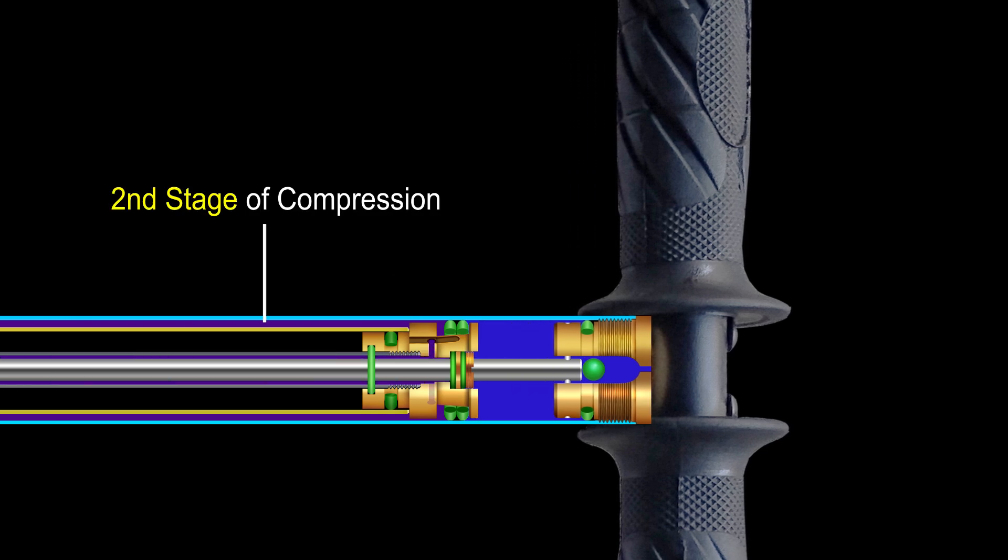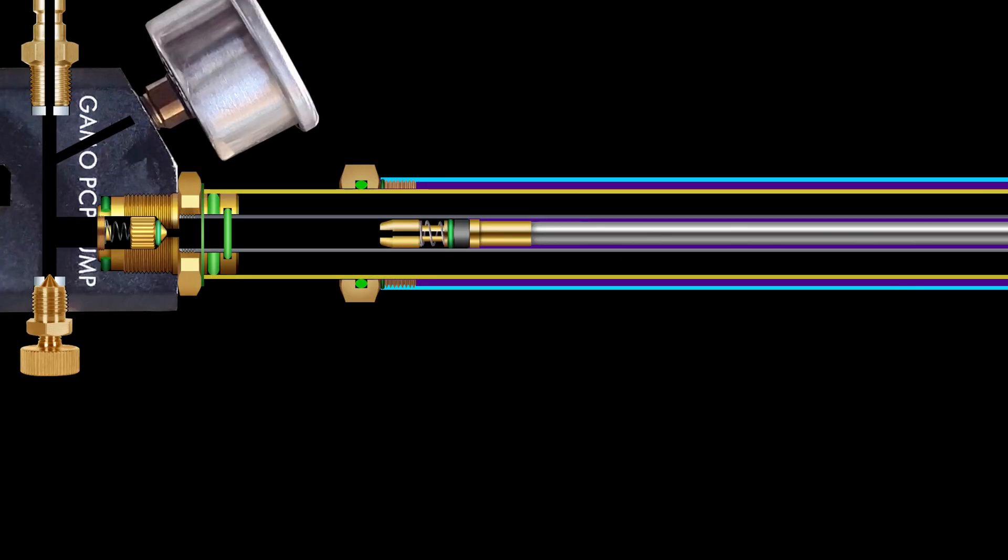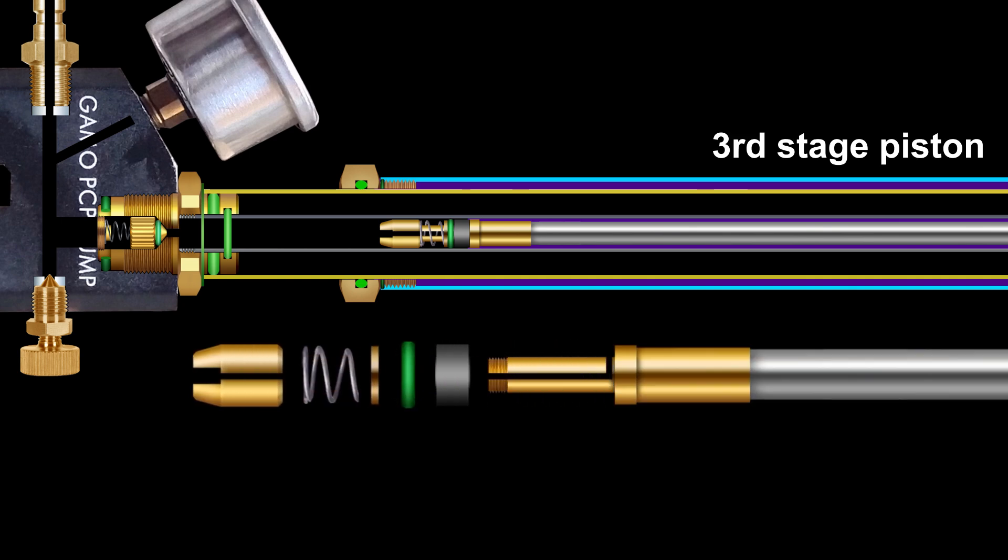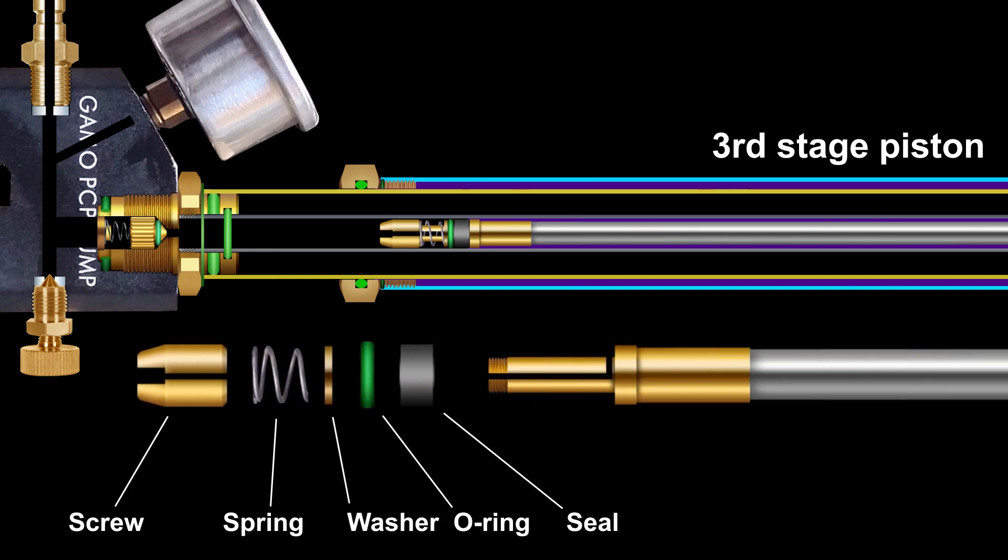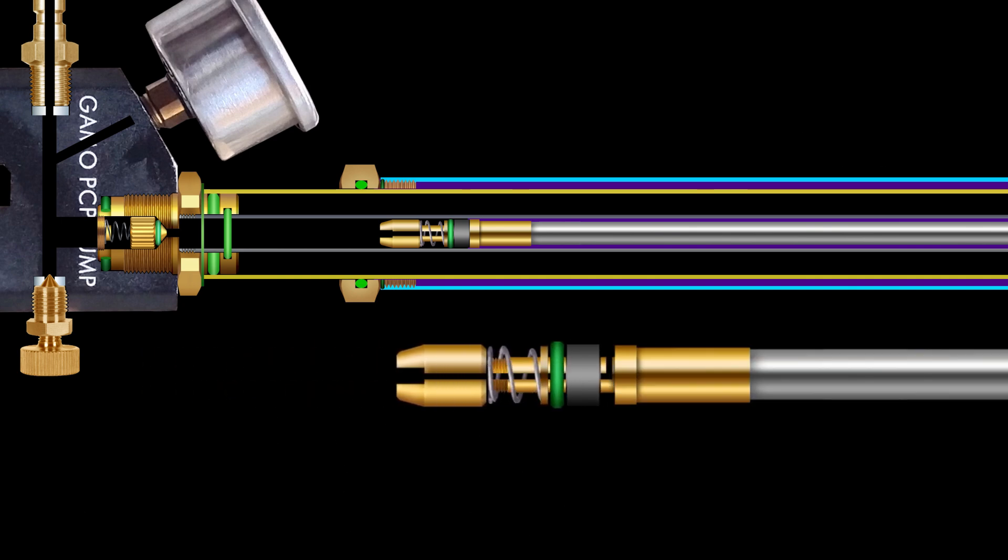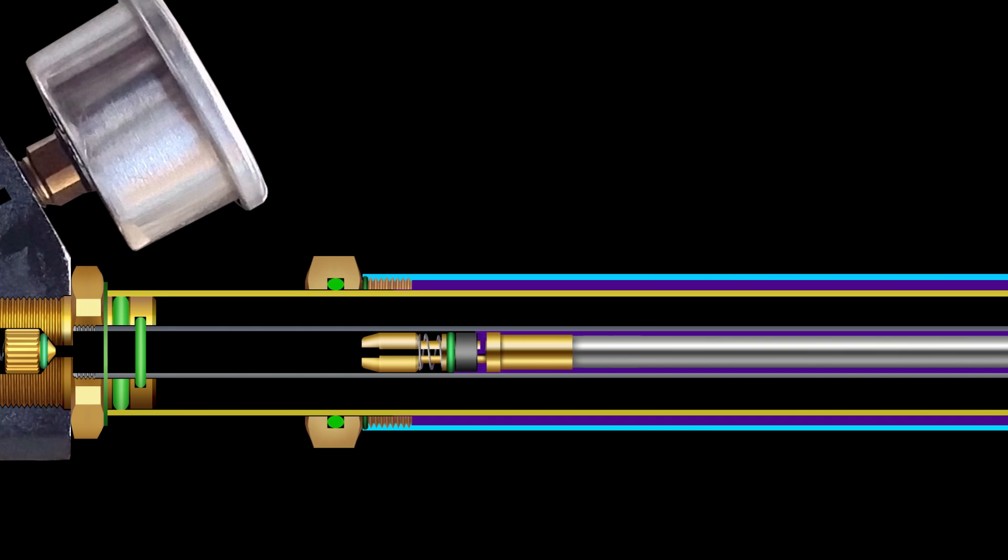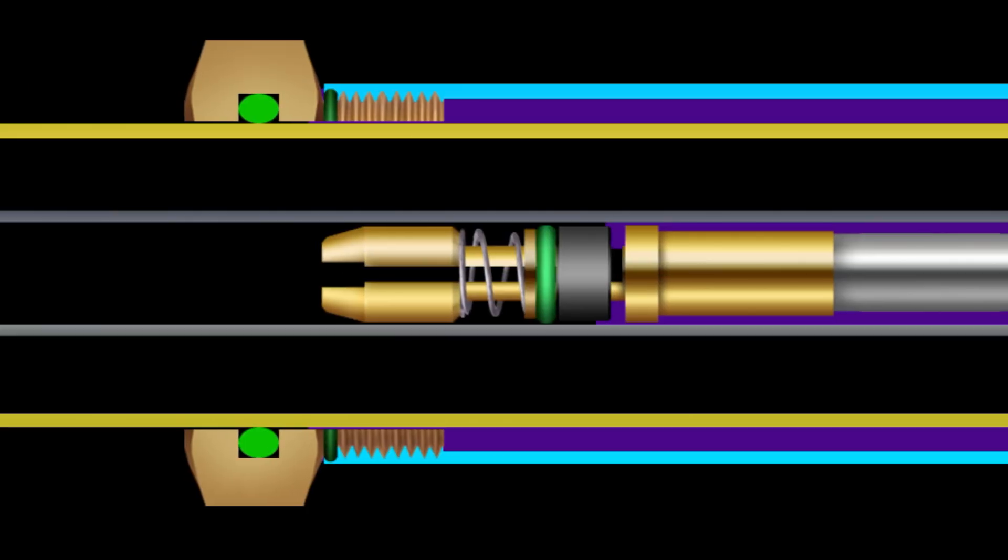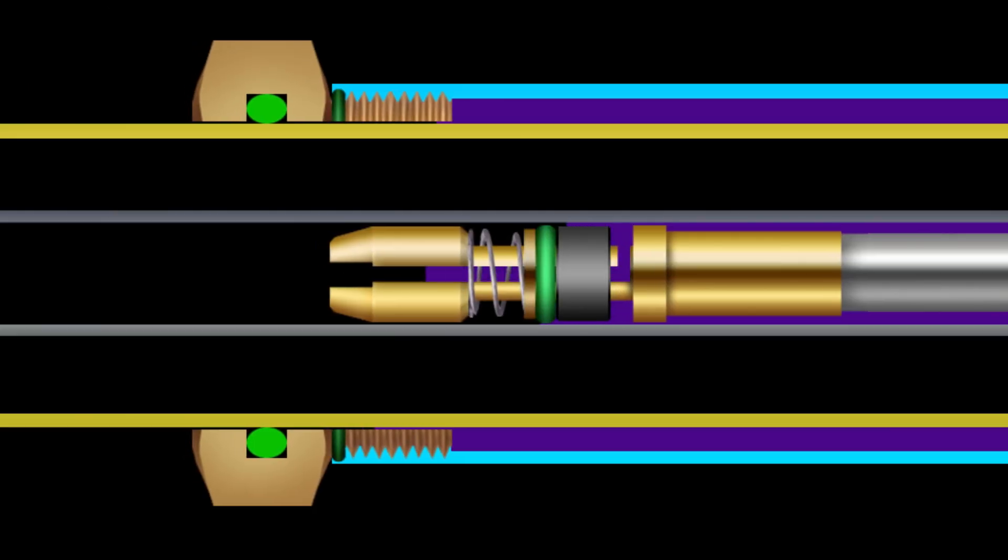This is the second stage of compression, shown in purple. The third piston rod also moves with the handle. This piston includes a seal, o-ring, washer, and a spring. While pulling the handle, the seal opens the airway, allowing air to flow into the left portion of the third tube.